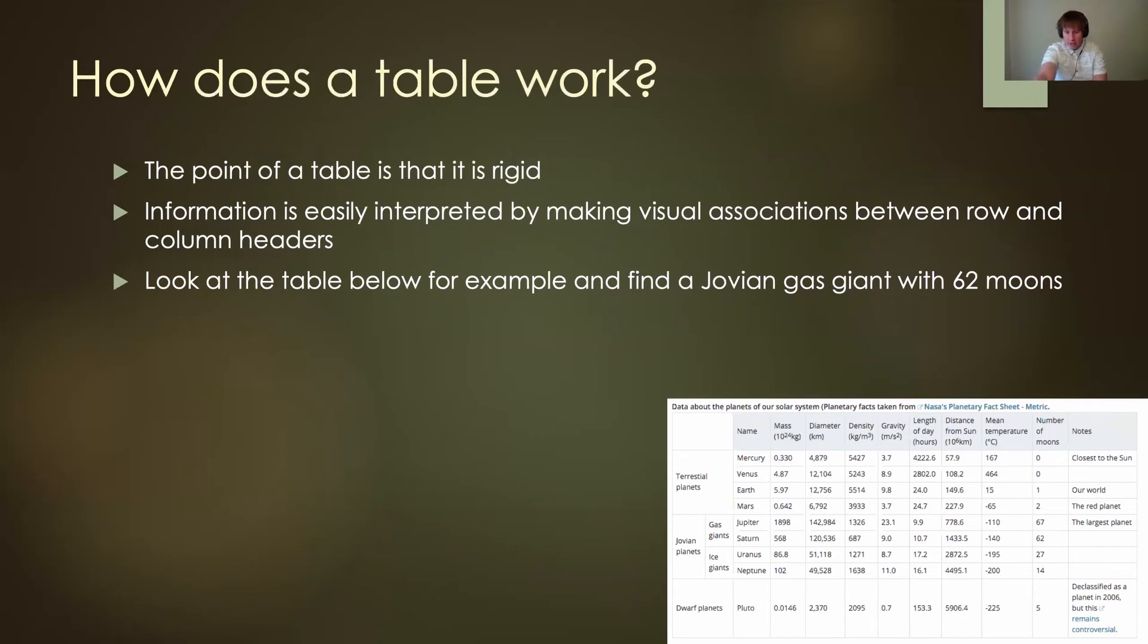Jovian planets. I could see the largest planet would be Jupiter. Jupiter has a mass of 1898. Let's see how many moons it has. So the moons are going to be 67. So I just go there, find Jupiter, scroll over, find the number of moons. I could find out Jupiter has 67 moons based off of this document here.